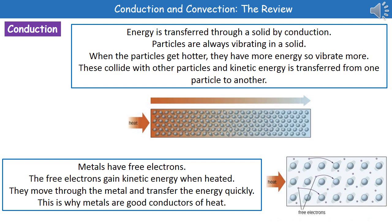If we think about a metal, metals are slightly different to other materials in that they've got these things called free electrons. Now these free electrons will also gain kinetic energy when we heat up the metal. Those free electrons are capable of moving through the metal, and that means energy is transferred from one end to the other faster. This is why metals are good conductors of heat — they've got free electrons that gain kinetic energy and move across the metal, transferring that kinetic energy quickly.